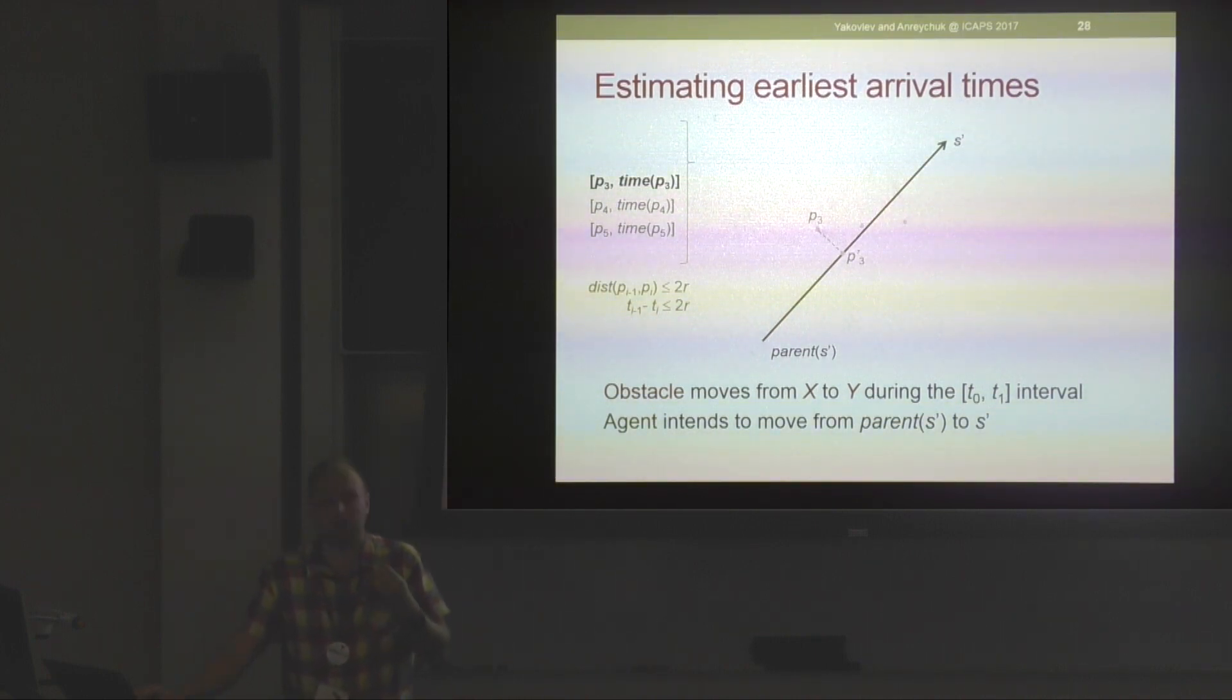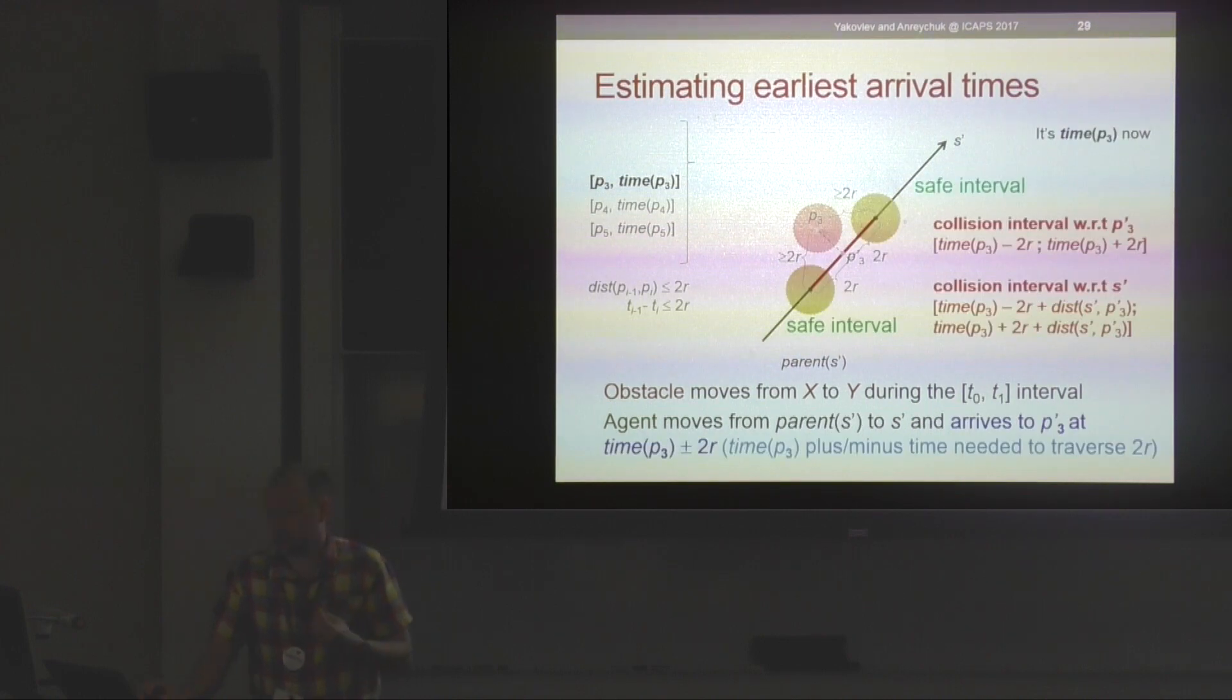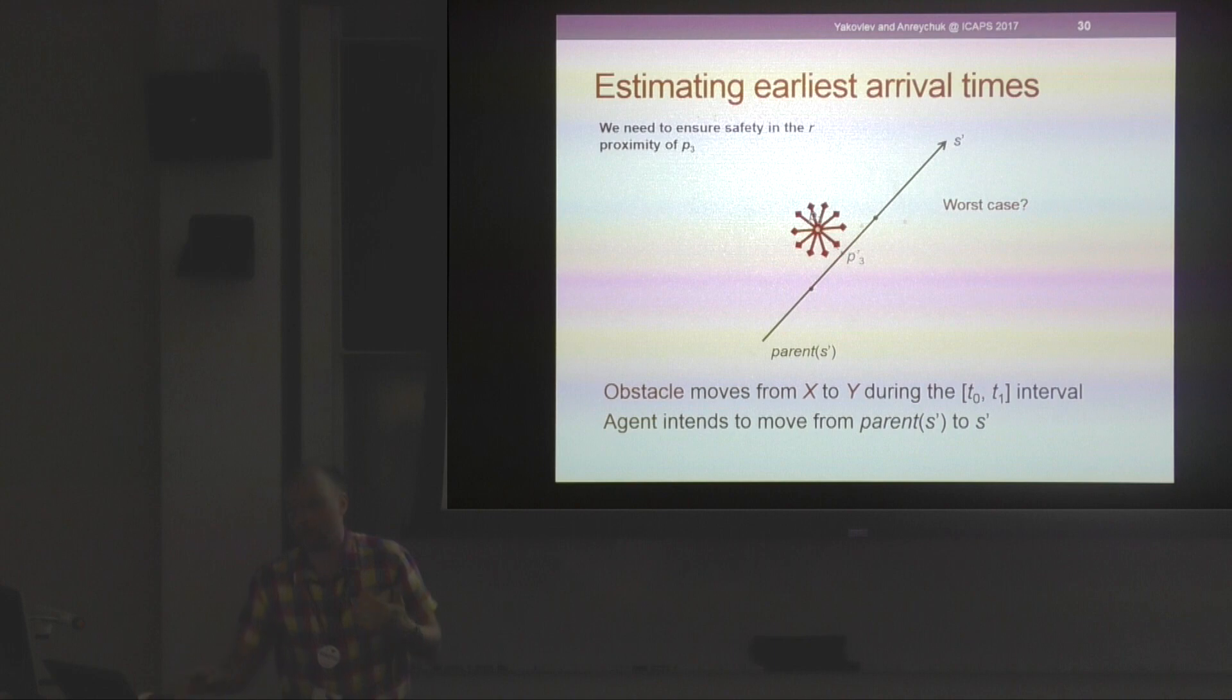Basically what we want to do is we want to estimate the collision interval induced by such constraint. One can show that the collision might happen only if the agent is somewhere along the line segment stretching 2R length units away from the p-prime point. Because length is equivalent to time, we can calculate the corresponding time interval, which means if we start moving from parent s-prime to s-prime outside this interval, no collision is guaranteed to happen when the obstacle reaches the constraint point.